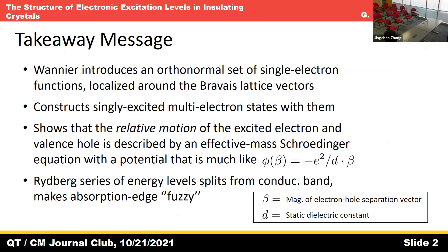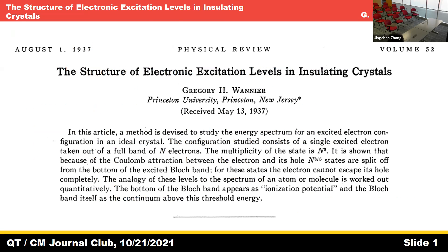What kind of configuration? A singly excited configuration. So you have N electrons — for semiconductors and insulators, he says insulating crystals — you do the band structure thing, fill up all the way, completely fill up the valence band, and then there's a band gap and an empty conduction band. These are the kinds of crystals that are not metals.